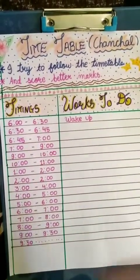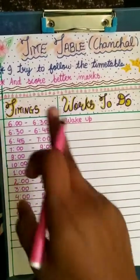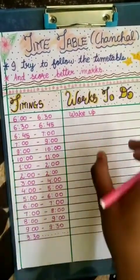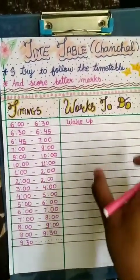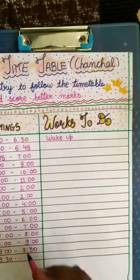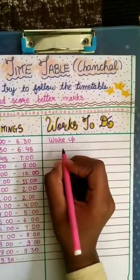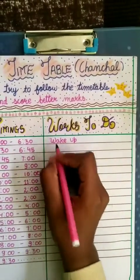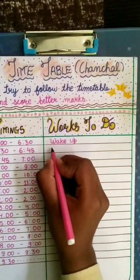I have written the timings. Now we are going to write the activities that I will do. From six to six forty-five, I rinse.